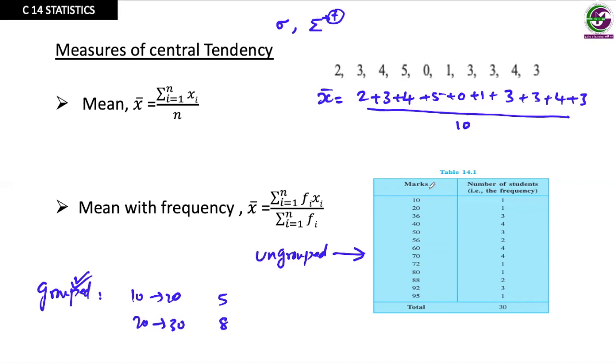We call the first column the items as xi. And how many times it is repeated is called frequency, represented as fi. Then we add another column to calculate xi multiplied by fi. 10 times 1 is 10, 20 times 1 is 20, 36 times 3 is 108, and so on. Finally, all these values you add, that value is sigma xi fi. We can rewrite this in the form sigma xi fi divided by n. This is sigma fi.